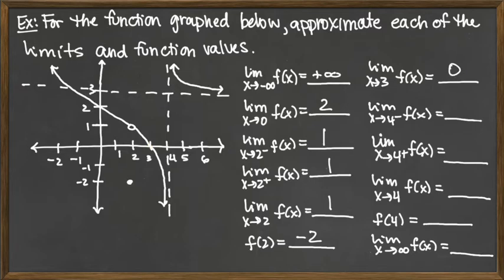Something interesting is happening at x equals 4, so we'll assess it completely. For the limit as x goes to 4 from the left, we look at values slightly less than 4. That left-hand arrow is going down without bound, so the limit value is negative infinity.